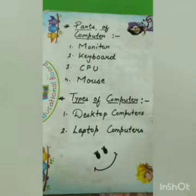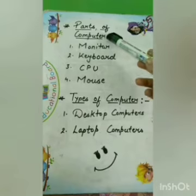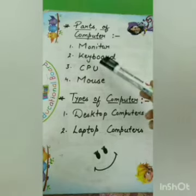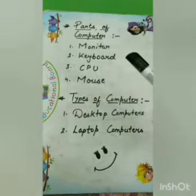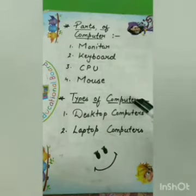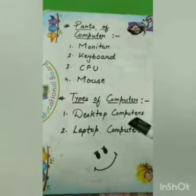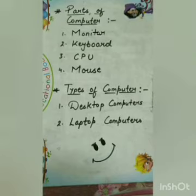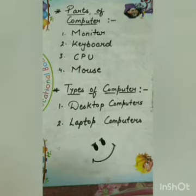Let's have a recap of what we have studied. We studied about the parts of a computer: monitor, keyboard, CPU, and mouse. Next, we studied about the types of computers: desktop computer and laptop computer. What is a desktop computer? A computer that can be kept on a table with a CPU cabinet. What is a laptop? Small computers that can be kept on our lap are called laptops — they can be carried easily anywhere.